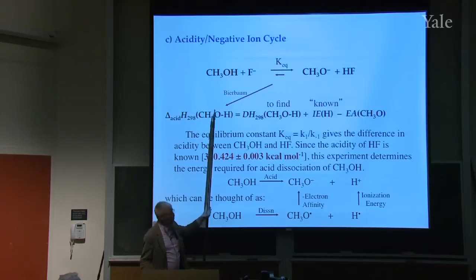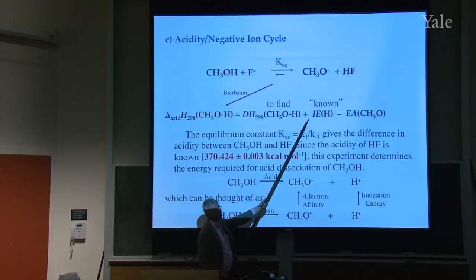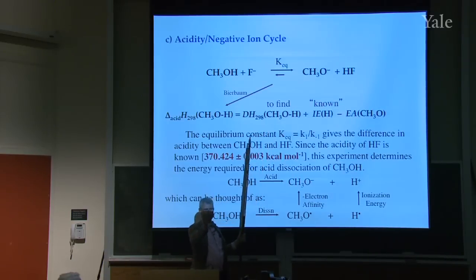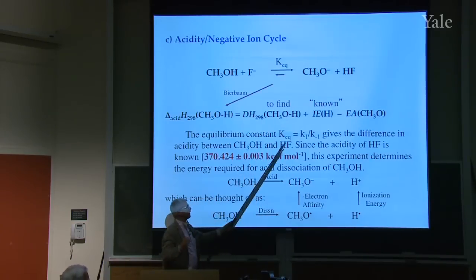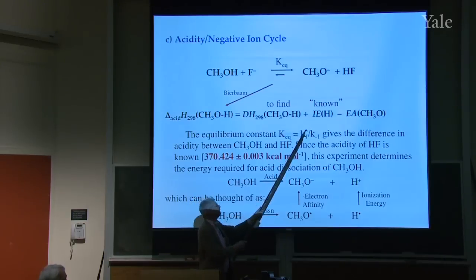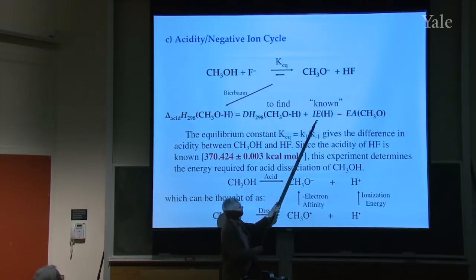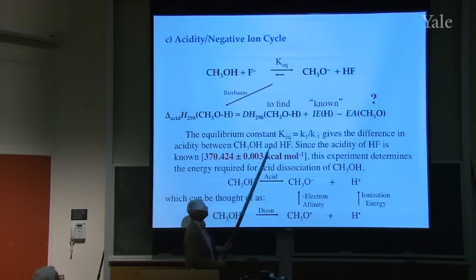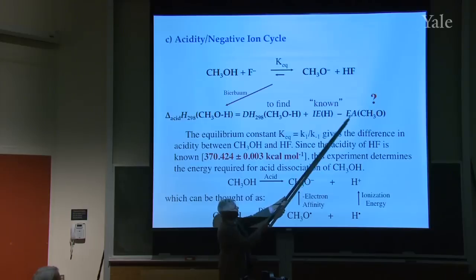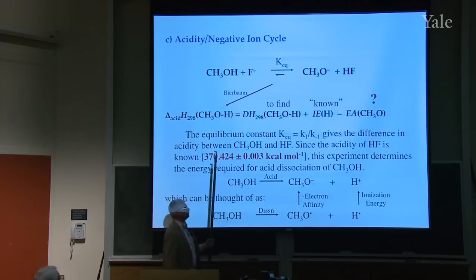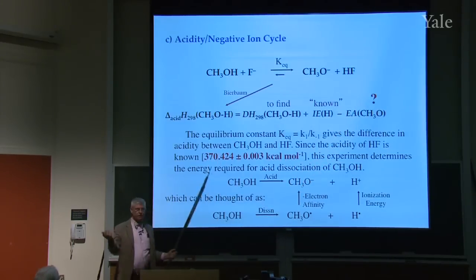The electron affinity for hydrogen atom is known to some extraordinary precision — it's known to like 80 digits. So the only thing you've got to do now is measure the electron affinity of the radical. How are you going to do that?